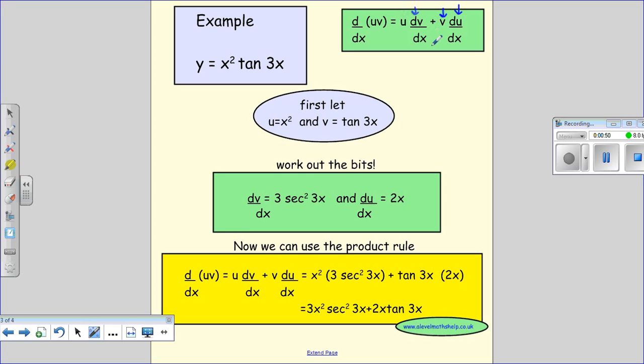So we just need to work out our dv/dx and du/dx and then substitute into the formula. The first thing is x², so u = x² and therefore v will be tan 3x.